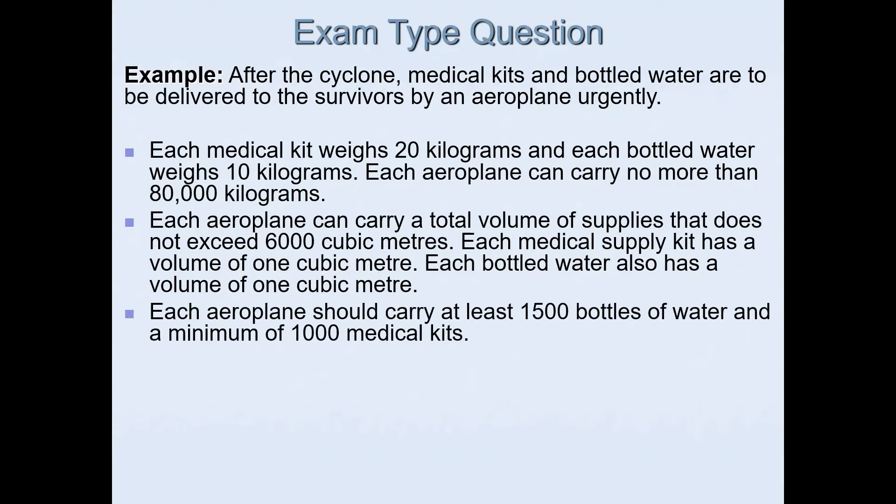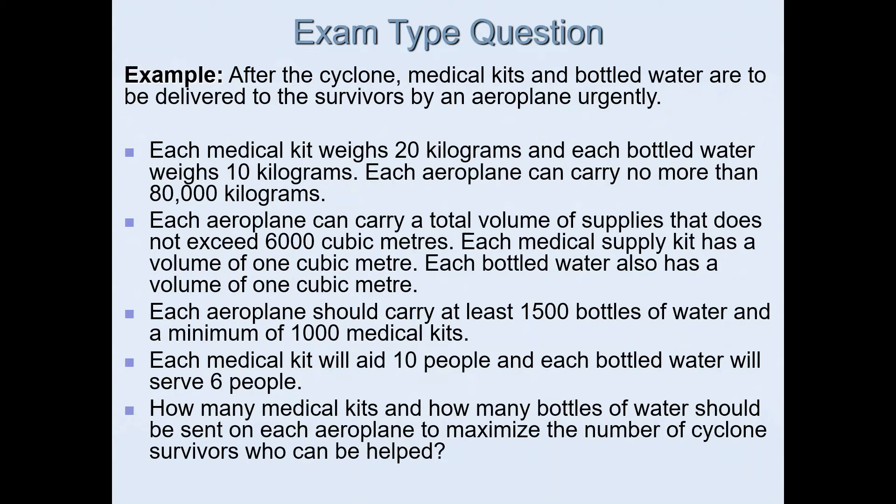Each aeroplane should carry at least 1,500 bottles of water and a minimum of 1,000 medical kits. Each medical kit will aid 10 people and each bottle of water will save 6 people. The question asks how many medical kits and how many bottles of water should be sent on each aeroplane to maximize the number of cyclone survivors who can be helped.